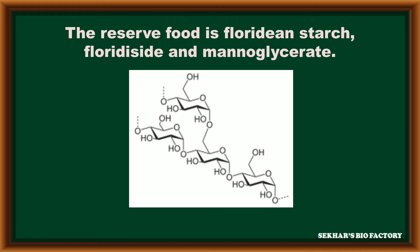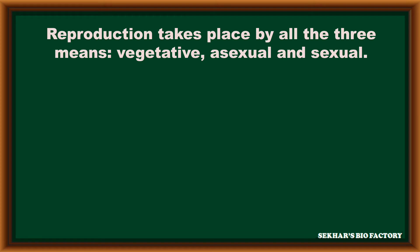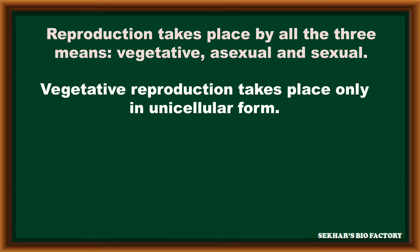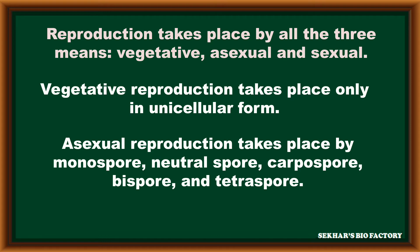These members perform reproduction with the help of three methods: vegetative reproduction, asexual reproduction, and sexual reproduction. Vegetative reproduction is rarely performed by only unicellular members. Asexual reproduction takes place with the help of specialized asexual spores like monospores, neutral spores, carpospores, bispores, and tetraspores.